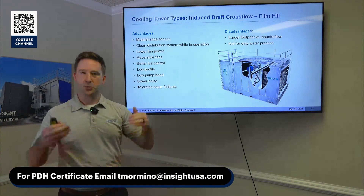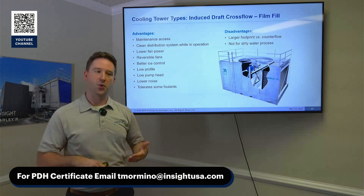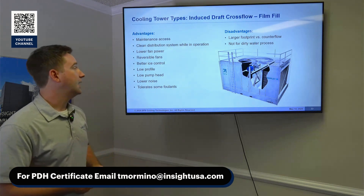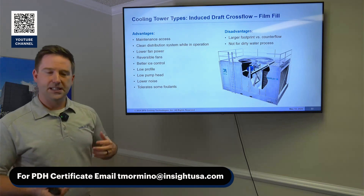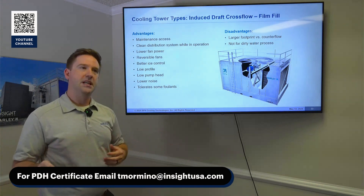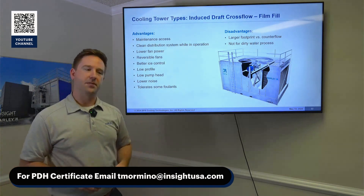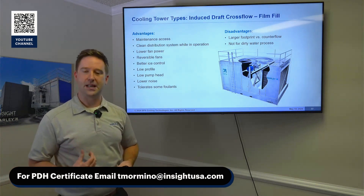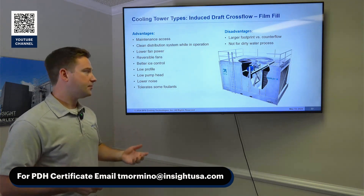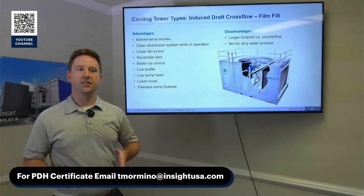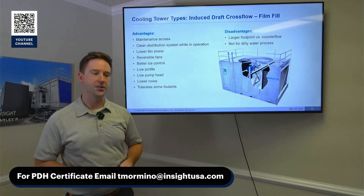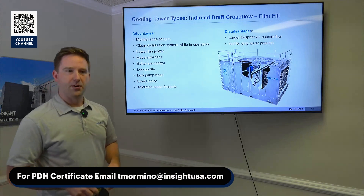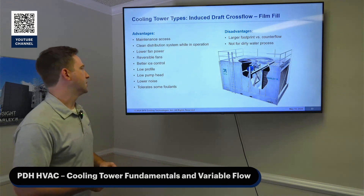Whenever you're able to reduce the flow in a controlled way, it helps maintain operation in cold weather. When I say it's a larger footprint, that's typically under 750 tons compared to a counter-flow tower. But once you get above that, the cross-flow tower will typically have a smaller footprint. Right around 750 tons is where that switches over.